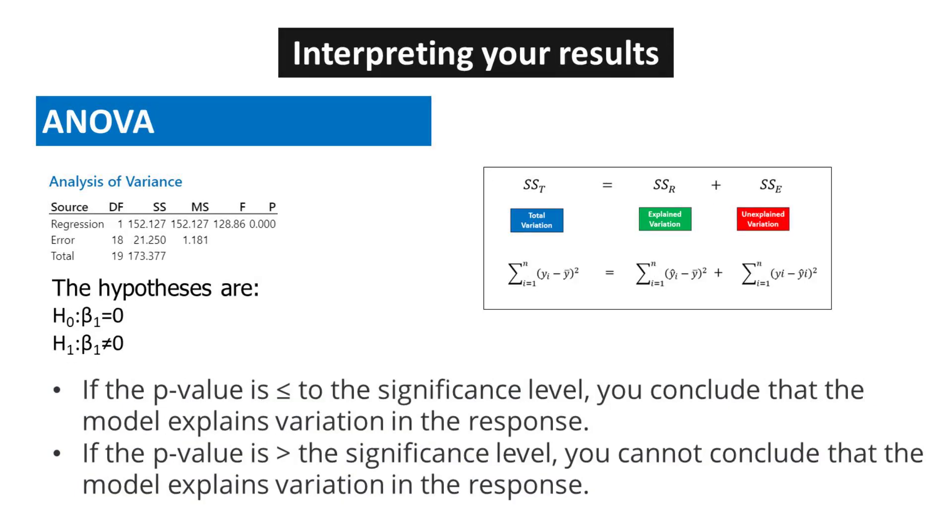If the p-value is less than or equal to the significance level, you conclude that the model explains variation in the response. If the p-value is greater than the significance level, you cannot conclude that the model explains variation in the response.